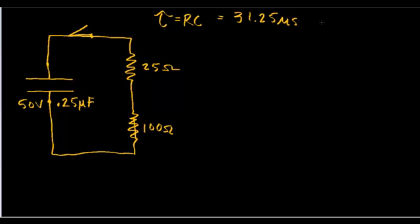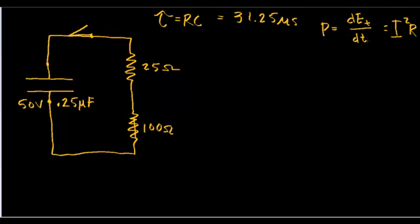That thermal energy is going to leave the system according to this equation. There are three different formulas for the power — we're going to work with I²R. So the total energy that we dissipate over time, we'll multiply both sides by DT, and we'll get DE is equal to I²R·DT.